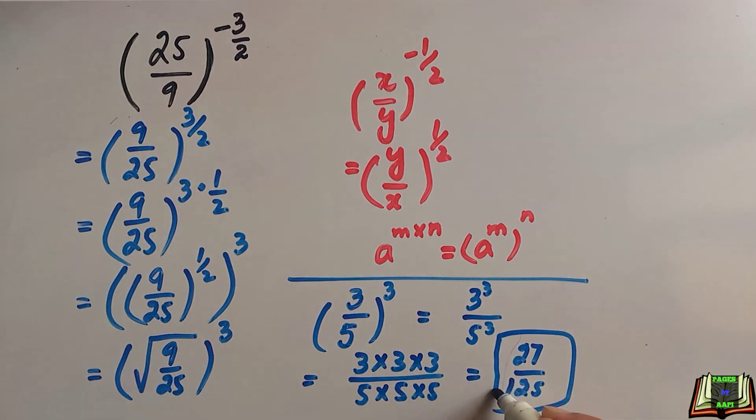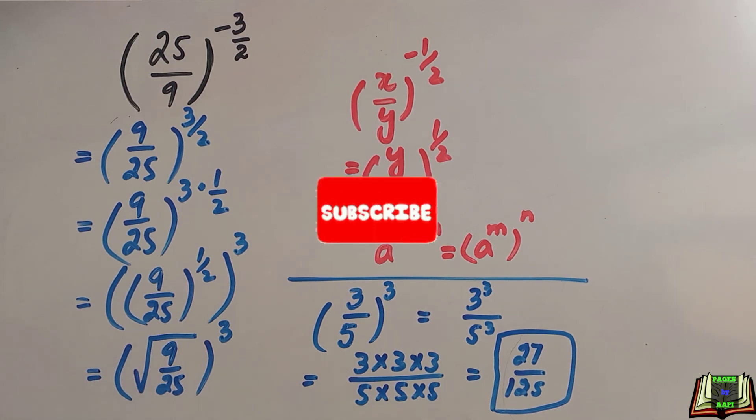27 over 125 is the required answer in its simplest form. I hope it is clear to you. If not feel free to ask me in the comment box. Don't forget to like and subscribe. Thanks for watching.